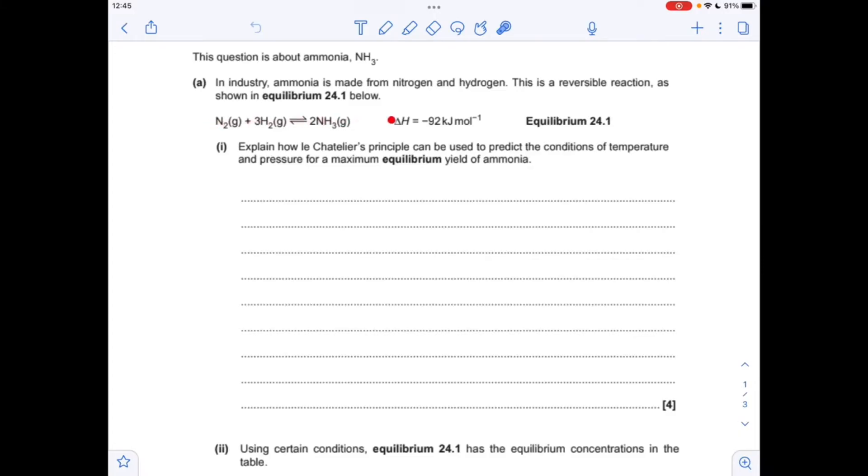Obviously we want the equilibrium to go over to the right. So starting with the temperature, we've got to look at the sign on the delta H, the enthalpy change. You can see it's negative, so the forward reaction is exothermic, so a low temperature will favour that forward exothermic reaction.